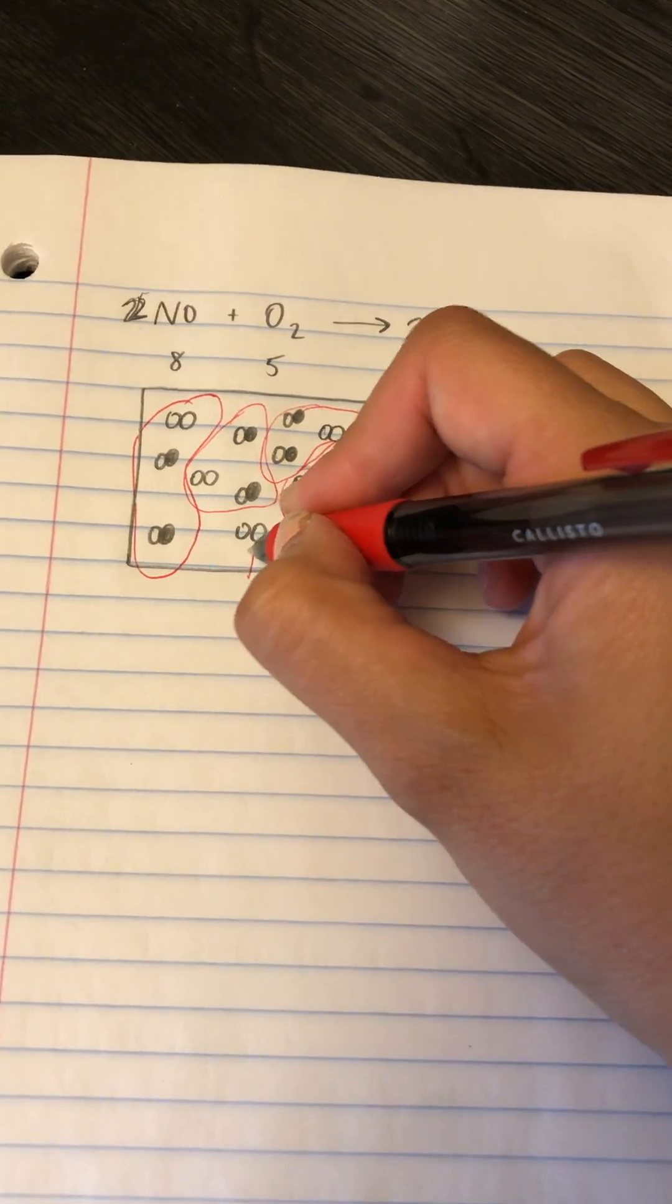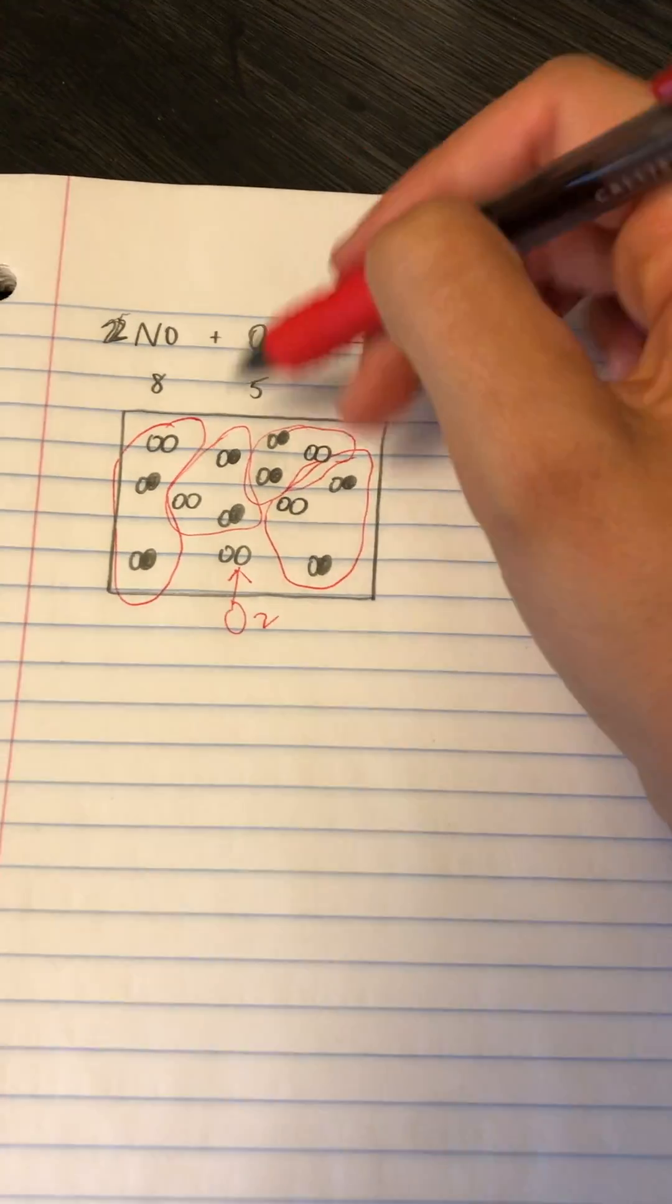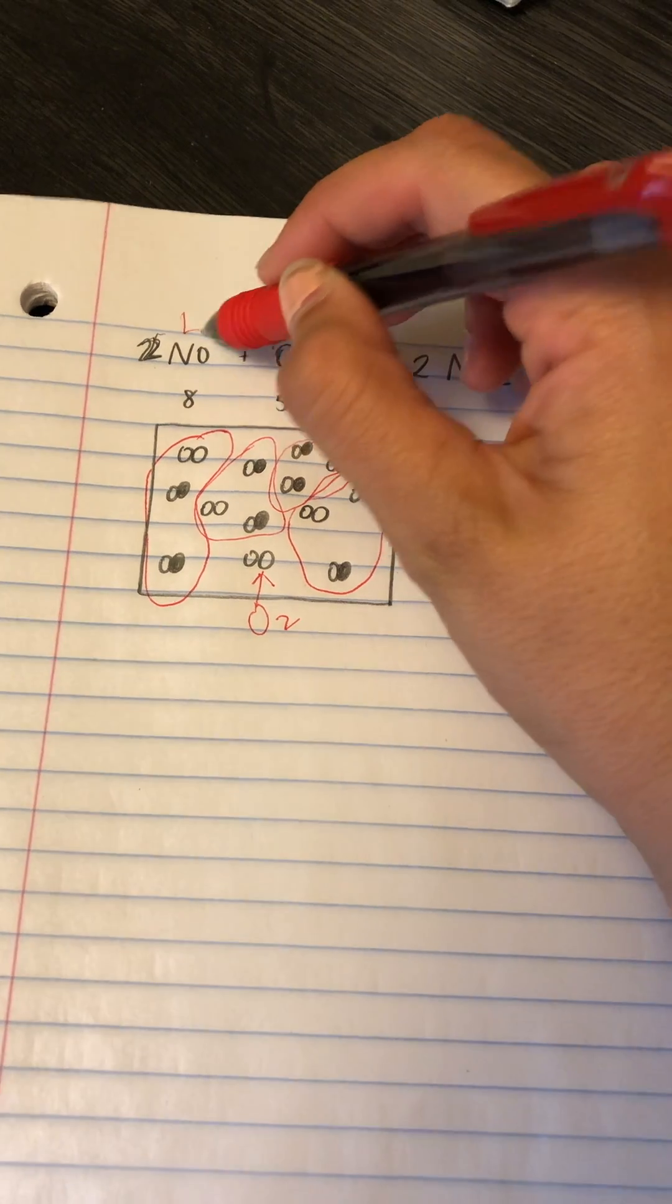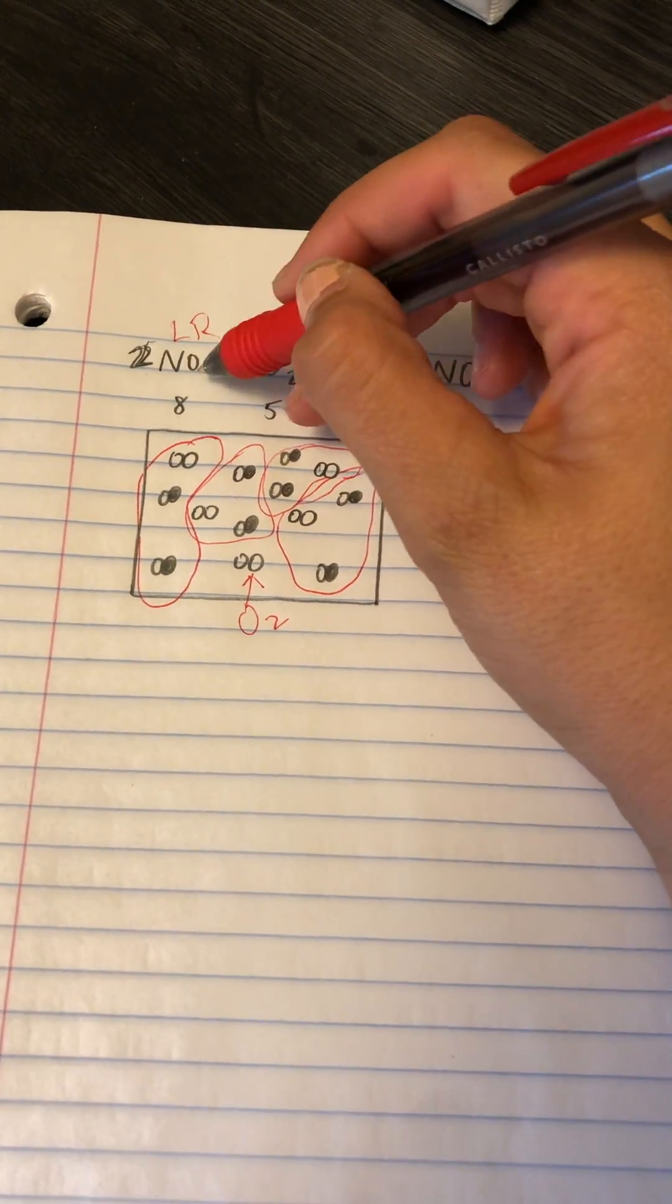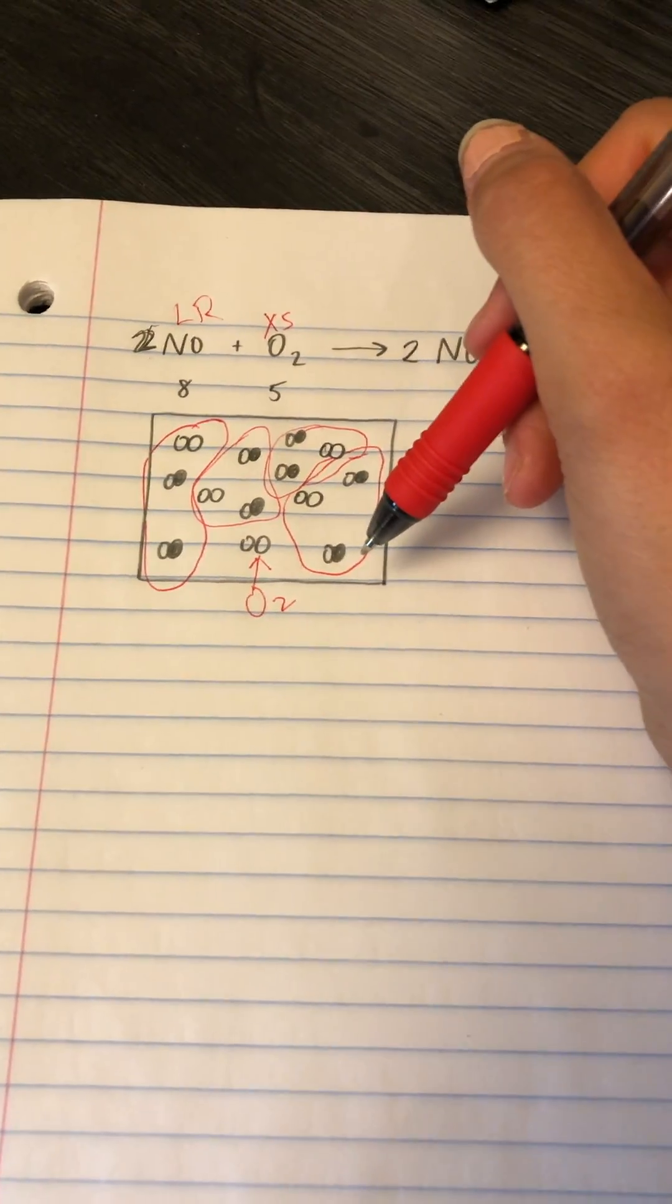Now I have an oxygen left over. So I have an oxygen left over, which means this is my excess reactant, meaning NO is what I run out of first. And so that is my limiting reactant.